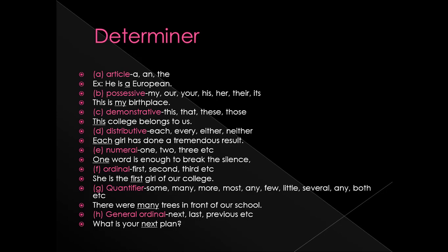Fourth subtype of determiner is distributive — words like each, every, either, neither. For example: 'Each girl has done a tremendous result.' Here 'each' modifies 'girl.' Fifth is numeral — one, two, three, etc. For example: 'One word is enough to break the silence.' Here 'one' modifies 'word.'